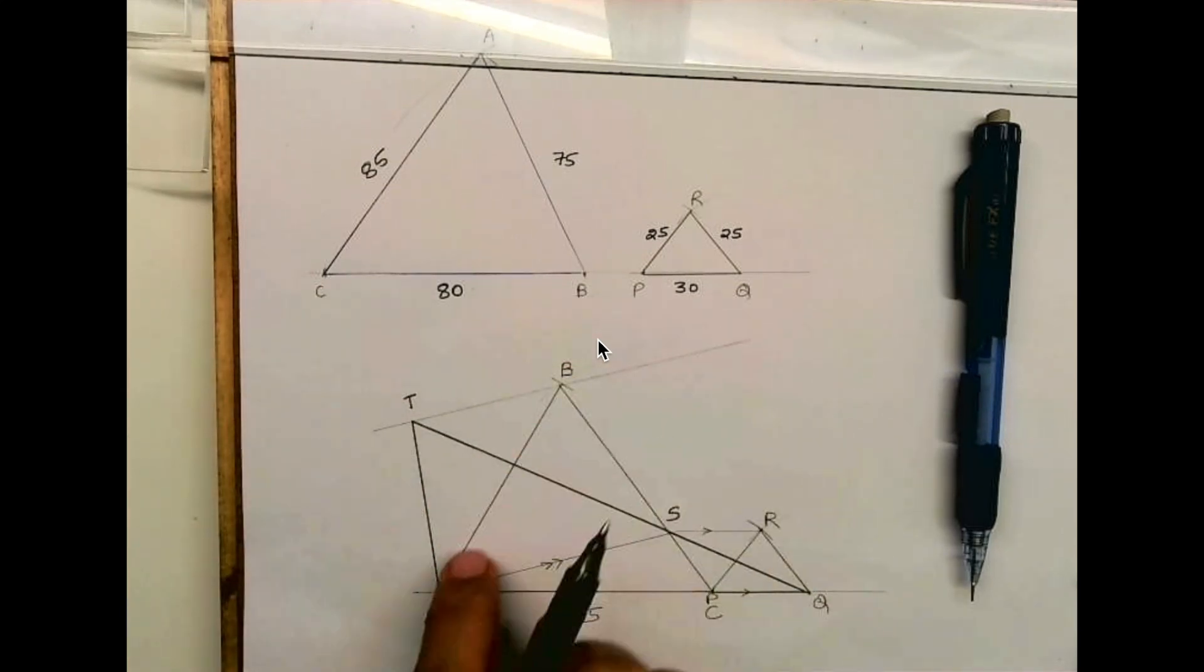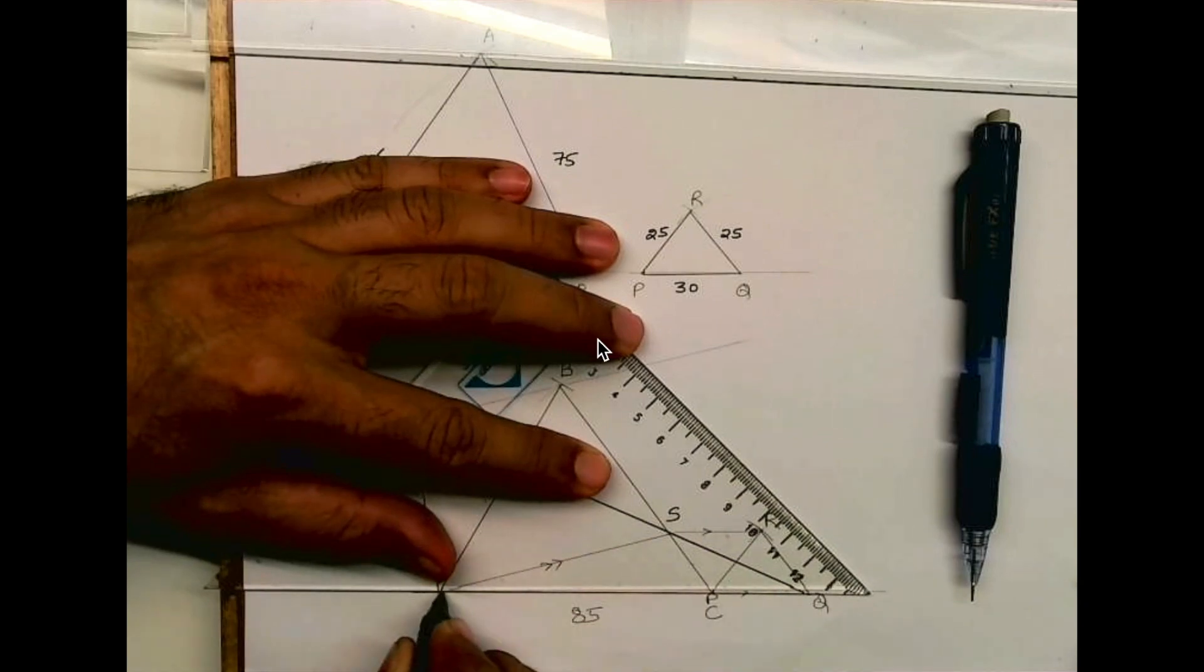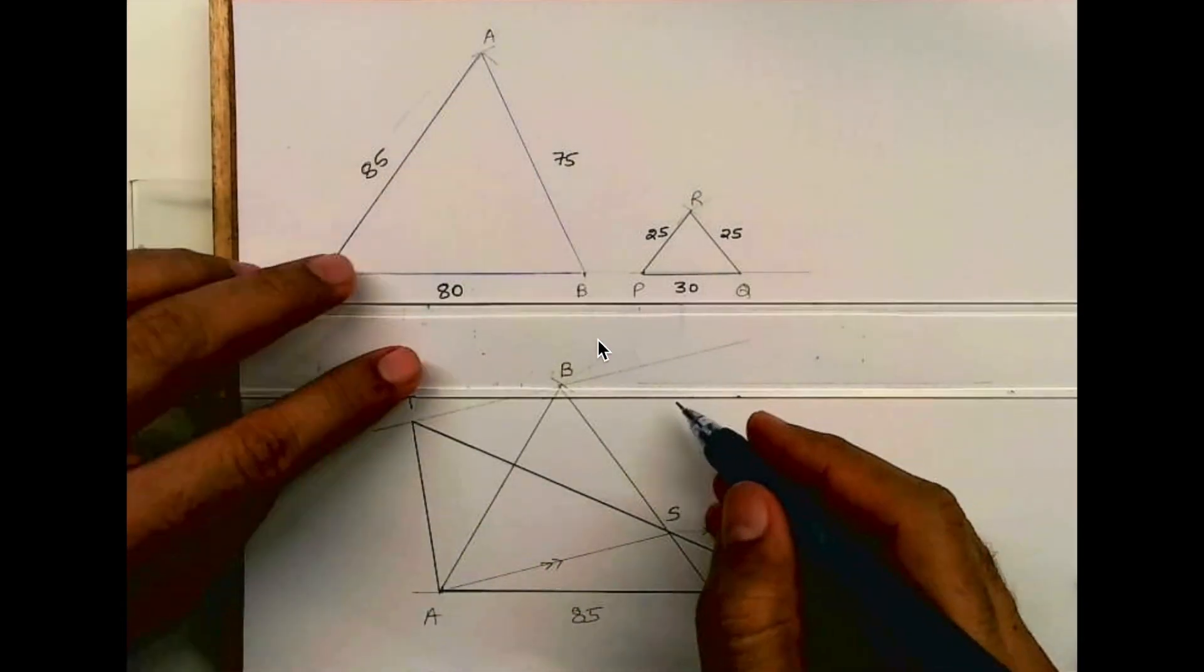So we got the main triangle ATQ. ATQ is our main triangle.